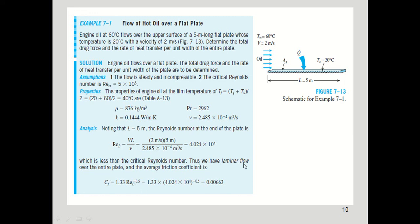Since we have laminar flow over the entire plate, the average friction coefficient is C_f = 1.33 · Re_L^(−0.5), which gives C_f = 0.00663.